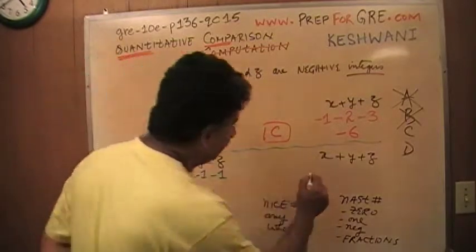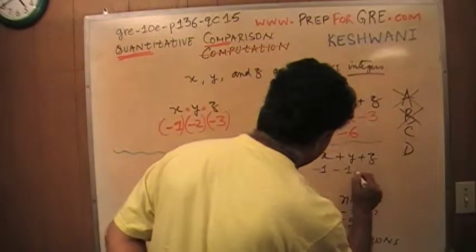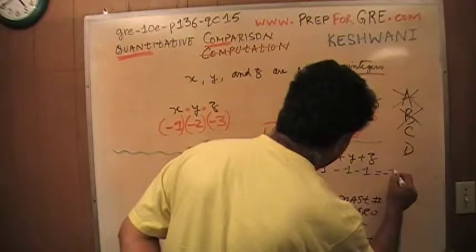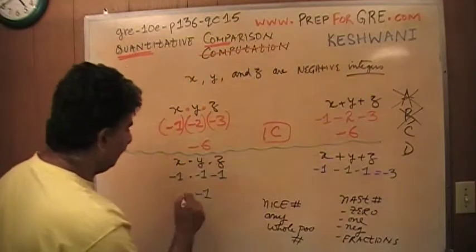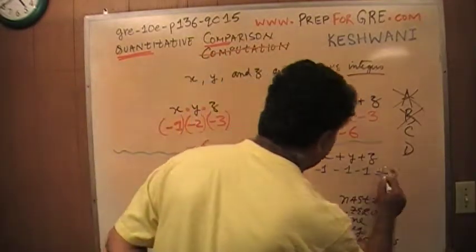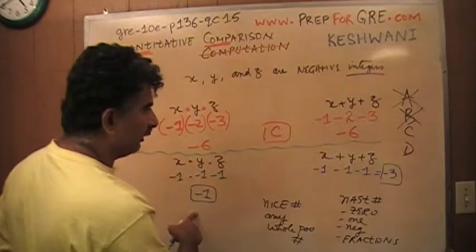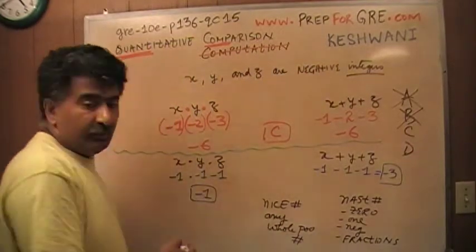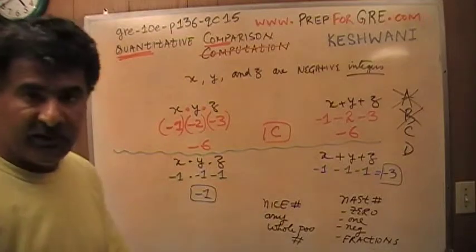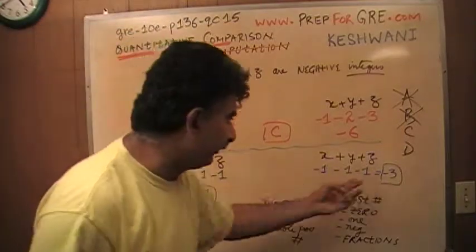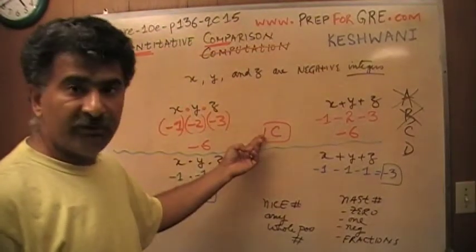Negative 1 times negative 1 times negative 1 is negative 1. And here it would be negative 1 plus negative 1 plus negative 1, which is negative 3. Which one is bigger? Of course negative 1 is bigger. Actually, it doesn't matter which is bigger. The only thing that matters is that they are different numbers.